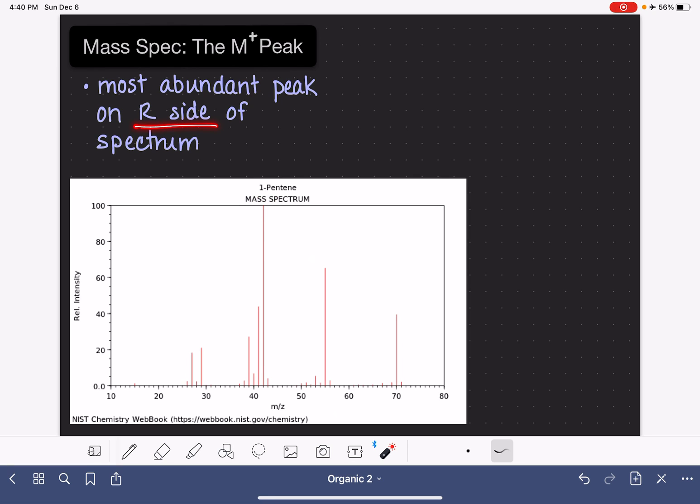It is the most abundant peak on the right hand side of the spectrum. When we go all the way over here to the right hand side on our horizontal axis, the most abundant peak on the right hand side is this little guy right here. We are not looking for the most abundant peak overall, and we're also not looking for the furthest right peak, that teeny tiny little one.